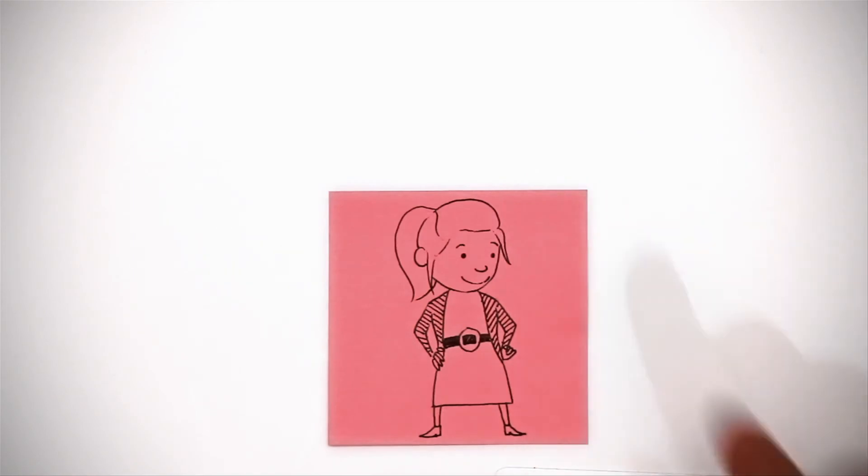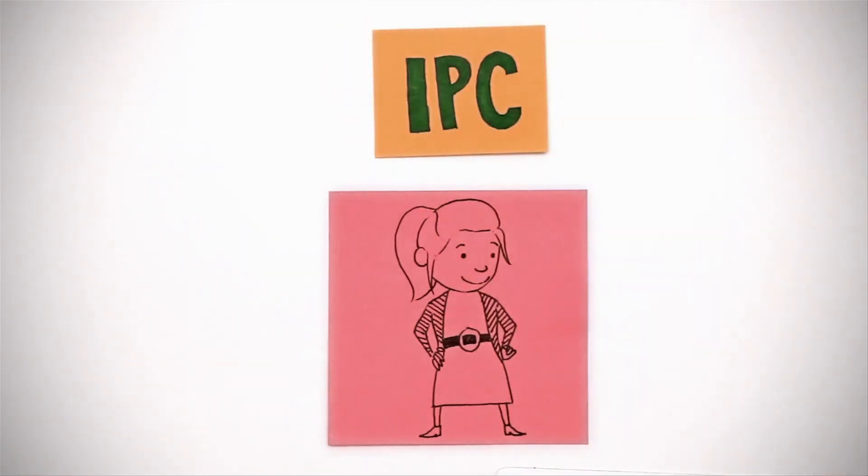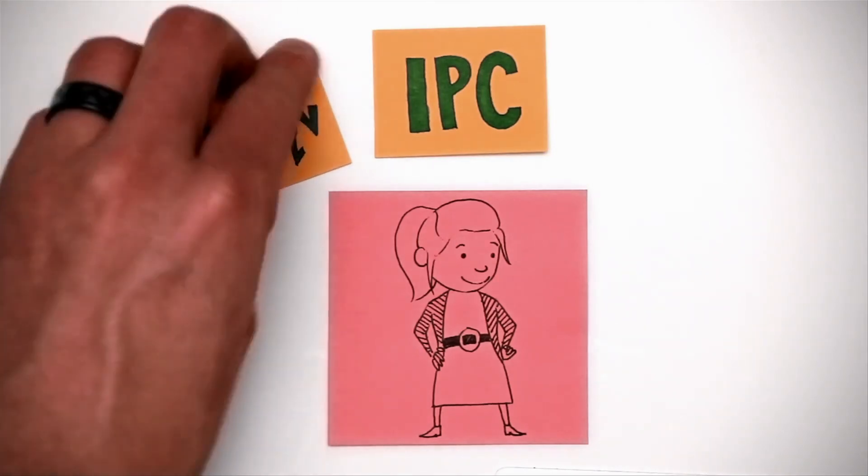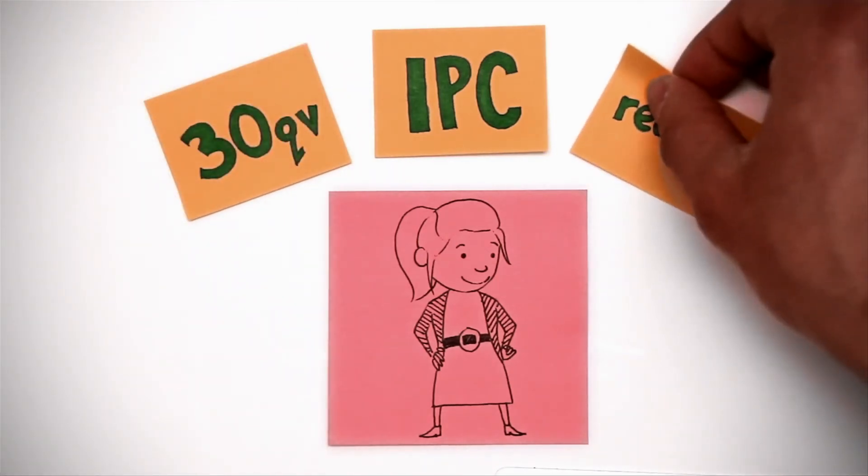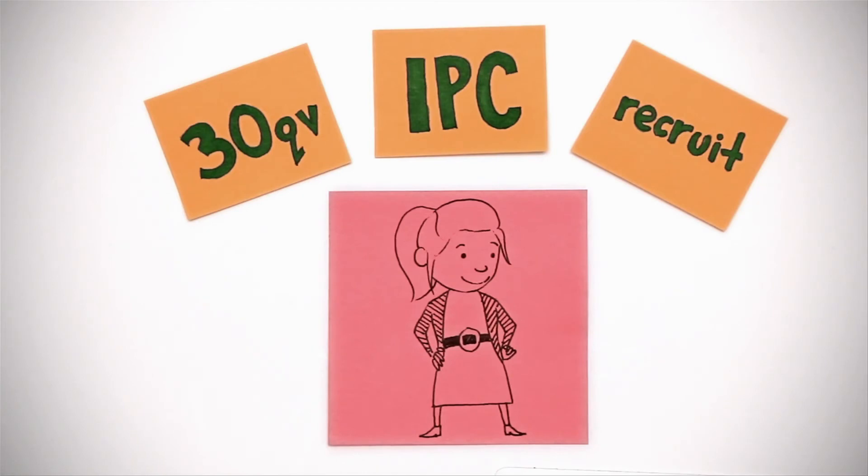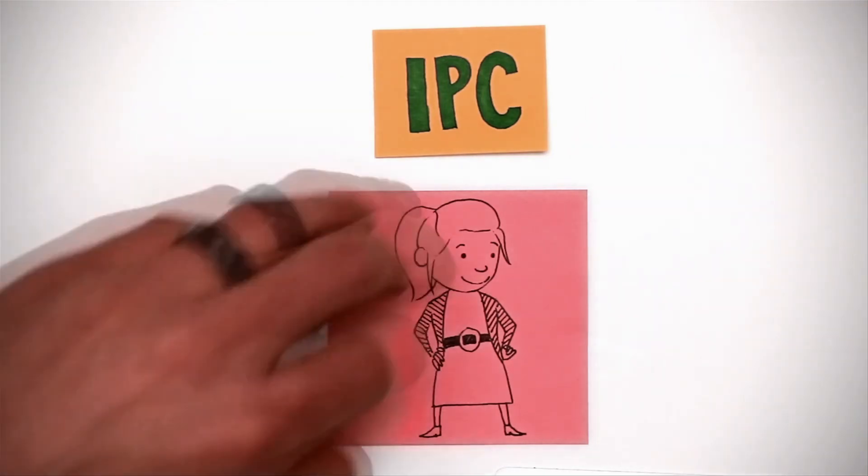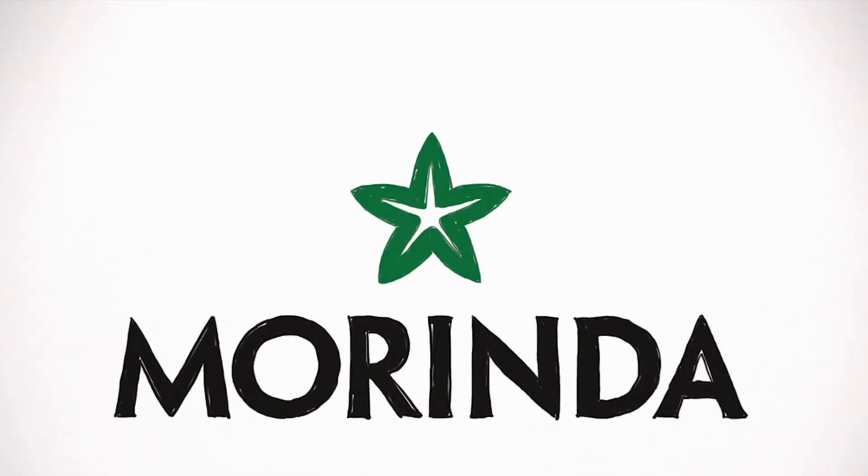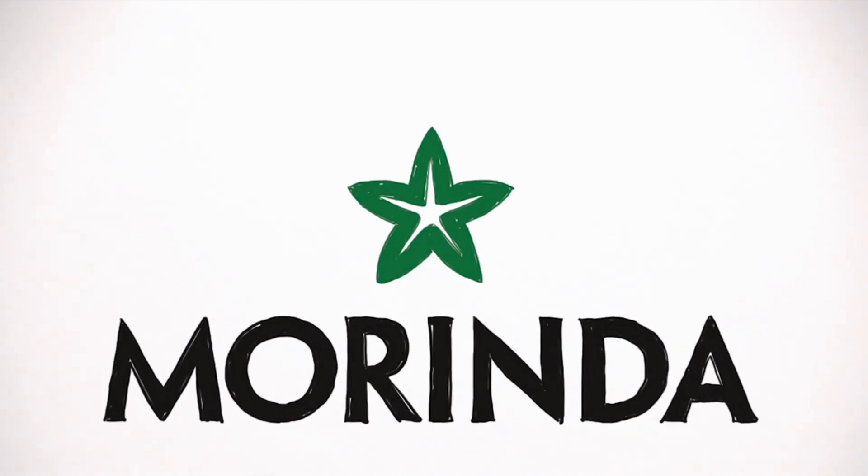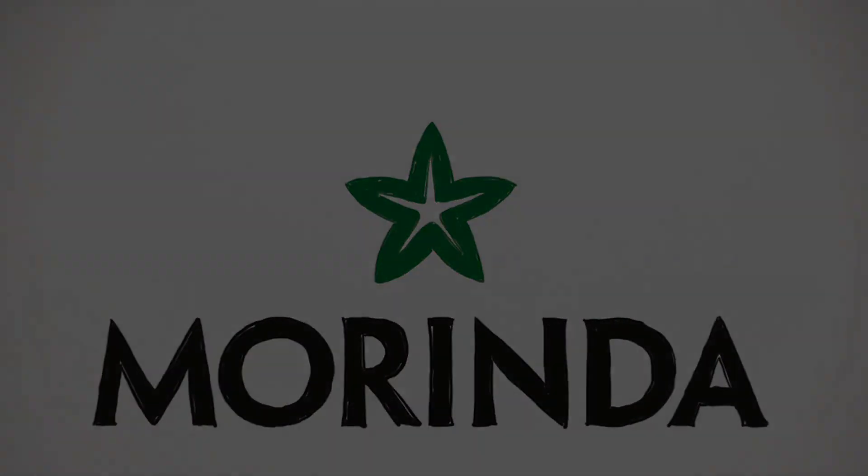So, remember the key to Lucy's success. Yeah, be like me. Be an active IPC who purchases at least 30 QV in product every month. Recruit a few IPCs of your own and help them be successful by training and supporting them in their business building efforts. Please refer to the person who shared this video with you for full details on the Mirinda compensation plan.